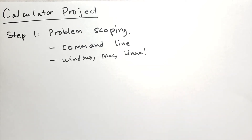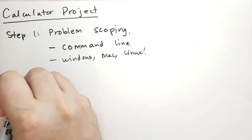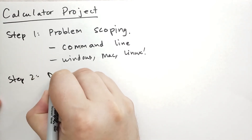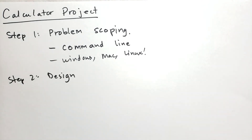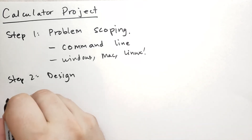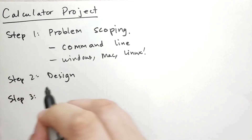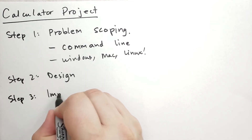Once we have the problem scoped, the next step is we're going to work and iterate on a design. There are two parts of the design: one part is what code is going to live where and what it's going to do, and the other part is how the software is going to behave for the end user — what the end user is going to do and what the software will do in response to their actions. We're going to focus on both aspects of the design in the next video.